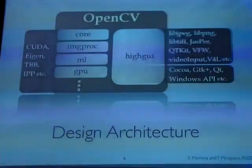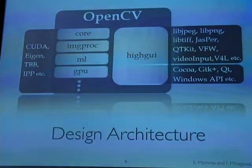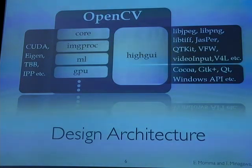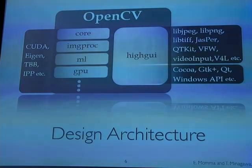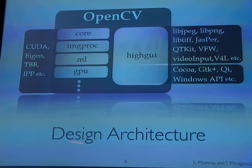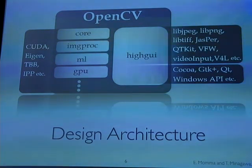Here is an outline of the design architecture of OpenCV, which shows the relationship among image and video libraries, graphical user interface libraries, computation and processing libraries, and OpenCV modules. The functionalities of these modules are described in our paper.